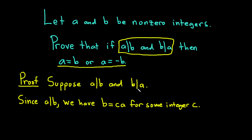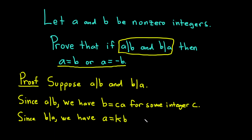Now let's use the other part of our hypothesis: b divides a. Since b divides a, we have that a is a multiple of b. So a is equal to kb for some integer k. A common mistake is to use the same variable. You can't specify c or k at this point — they're just unknown integers.